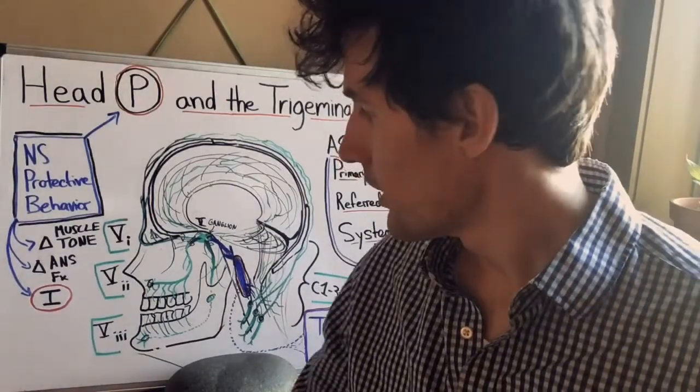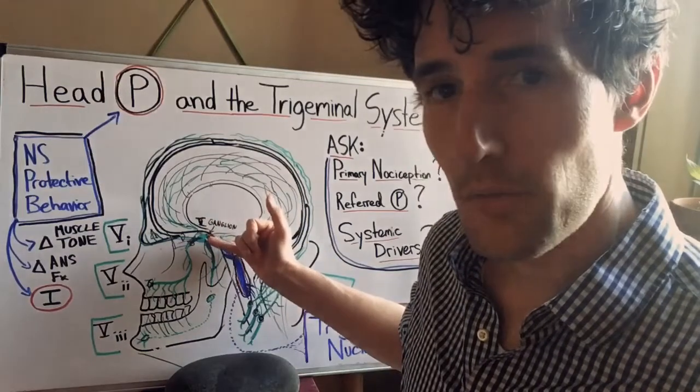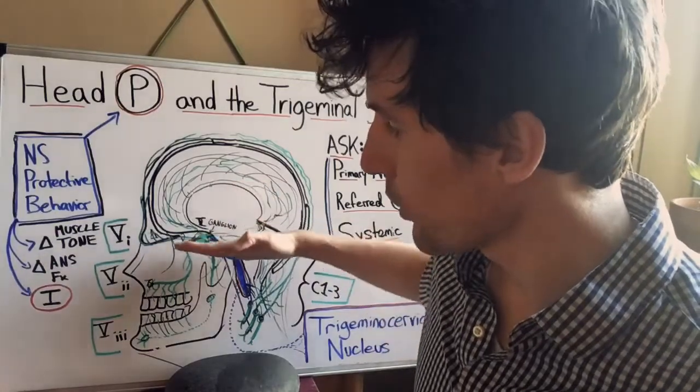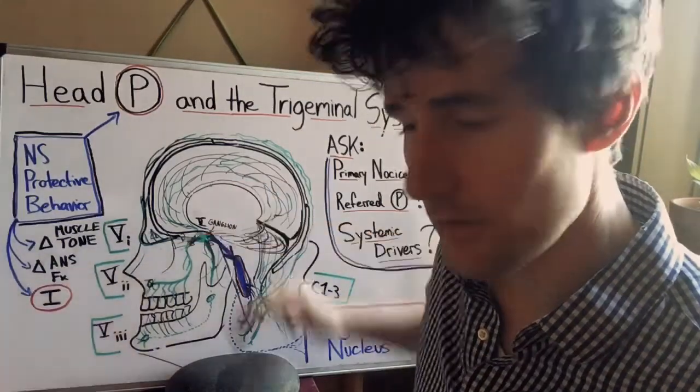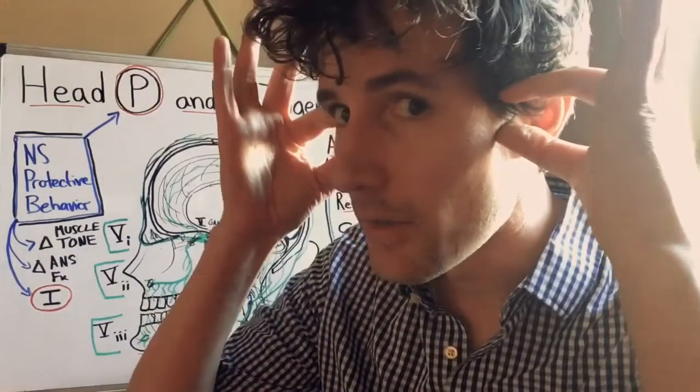So let's break it down. The trigeminal nerve itself is the fifth cranial nerve emerging from the bottom of the brain and it has a pair of ganglia that sit in the floor of the sphenoid bone, right here in the center of the head. It's kind of behind your eyeballs and about here, okay?